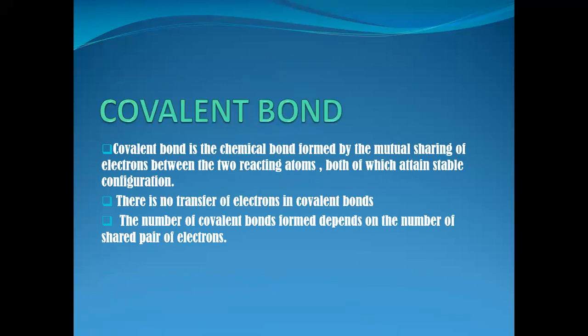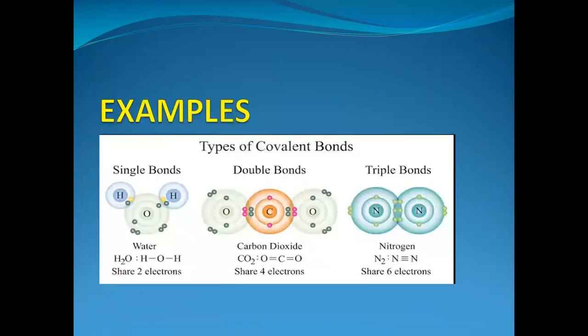Moving on to covalent bond: a covalent bond is a chemical bond formed by the mutual sharing of electrons between two reacting atoms, both of which attain stable electronic configuration. There is no transfer of electrons involved in a covalent bond. The number of covalent bonds formed — single, double, and triple — mainly depends on the number of shared pairs of electrons. There is a single bond formed between O and H of the water molecule, with only one electron pair shared. In a double bond, two pairs of electrons are shared between C and O. In a triple bond, three pairs of electrons — six electrons — are shared between two nitrogen atoms.